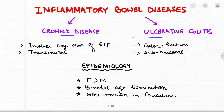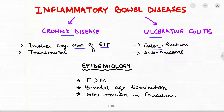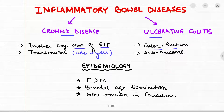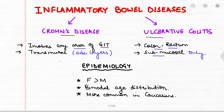Crohn's disease involves any area of the GIT, whereas ulcerative colitis specifically involves the colon and the rectum. Crohn's disease is transmural in involvement — that is, all layers can be involved — whereas in ulcerative colitis, the involvement is only submucosal.